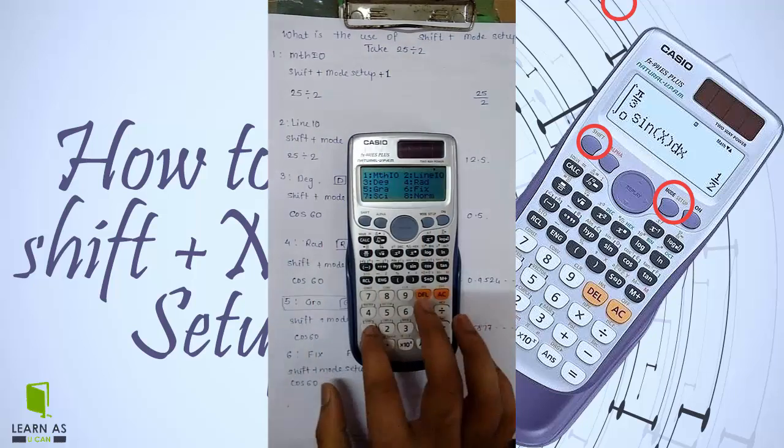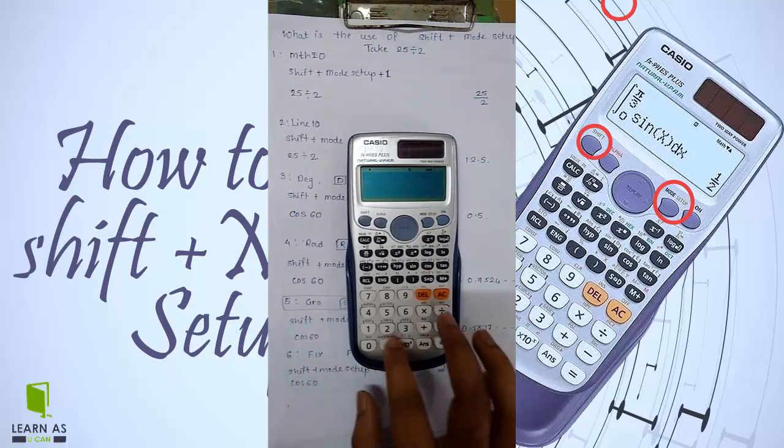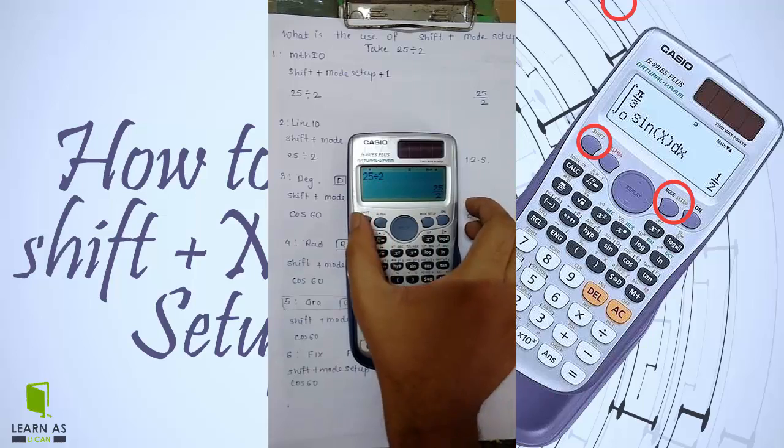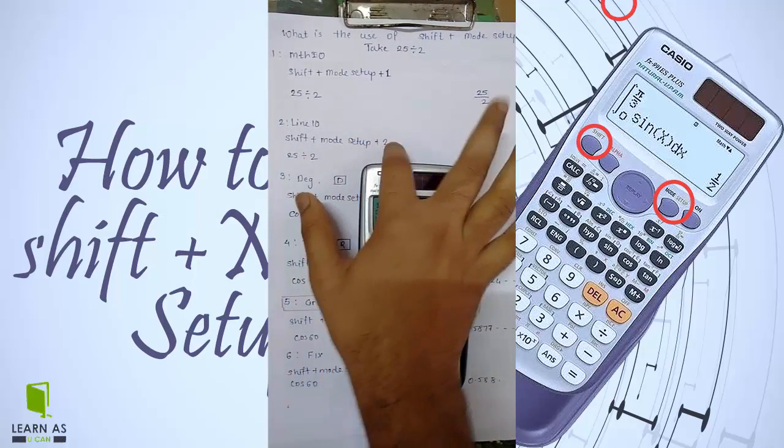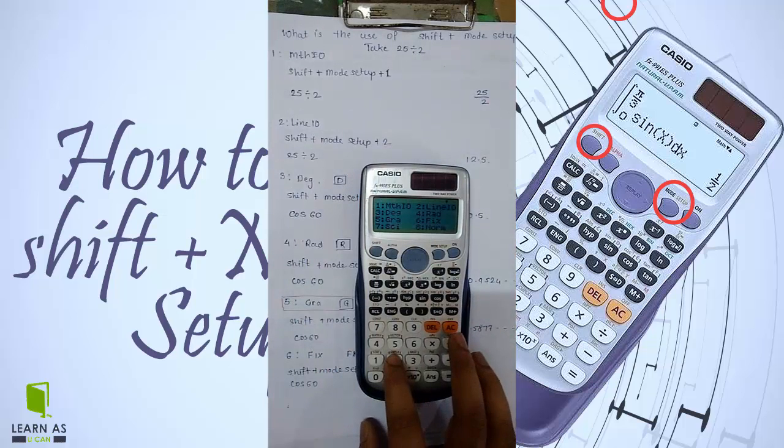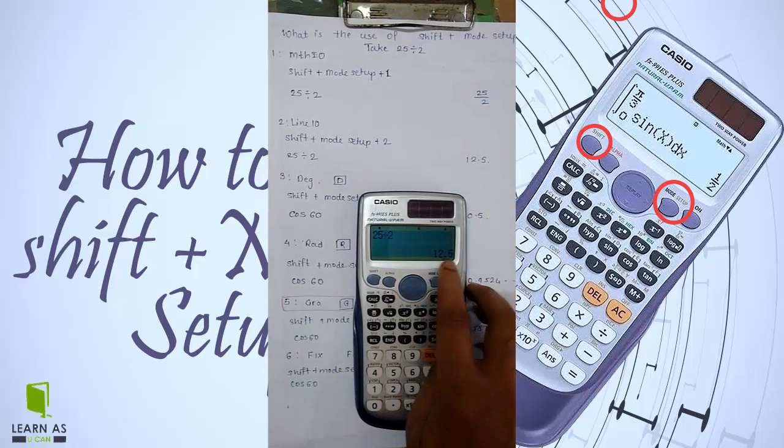I am selecting option one. For example, 25 divided by 2 - I am getting this result. If I press shift plus mode setup plus 2, then you can see I got this result: 12.5.